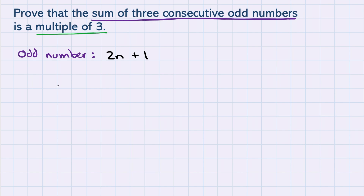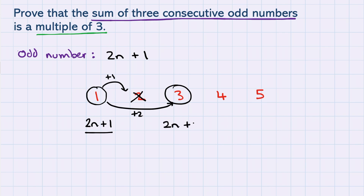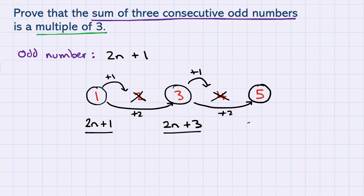We actually need to find three consecutive odd numbers. So let's take 2n plus 1 and figure out what the next odd number would be using a numerical example. If we start at 1 and add 1, we arrive at an even number — not what we want. But if we add 2, we arrive at the next odd number. So adding 2 to the expression gives 2n plus 3. Doing the same again — adding 2 — gives 2n plus 5. By doing this, we've figured out how to algebraically express three consecutive odd numbers.